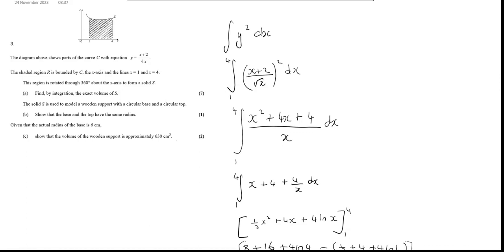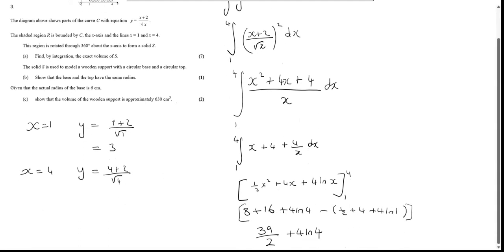So show that the base and the top have the same radius. So we want to find the y-coordinate of this point and this point. So what's the y-coordinate when x is 1? So if we have x as 1, then y is going to be 1 plus 2 over root of 1, that's 3. And if x is 4, y is going to be 4 plus 2 over root of 4, which is 2, and that's going to give us 3. So both the y-coordinates are 3, and therefore the radius must be the same.